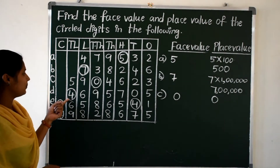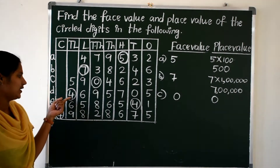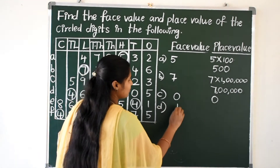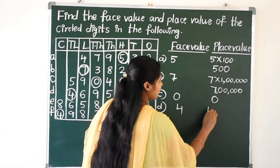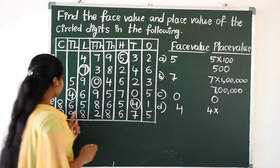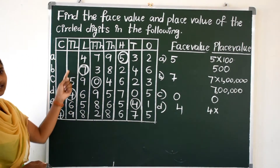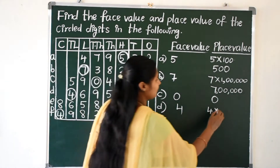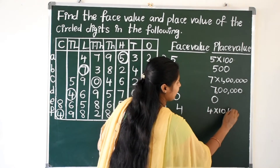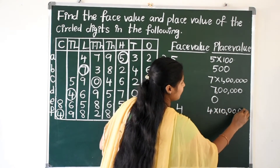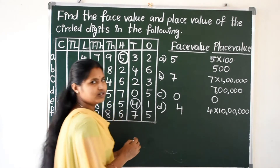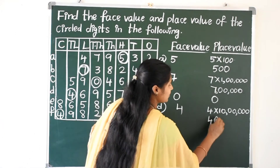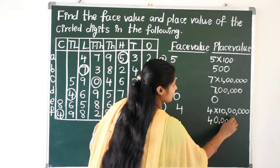The face value of four and the place value of four — four is in which place? Four is in the 10 lakhs place. So four multiplied by 10 lakhs gives 40 lakhs.